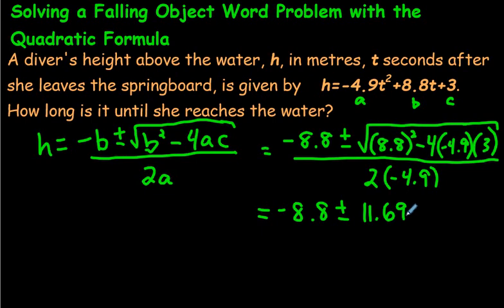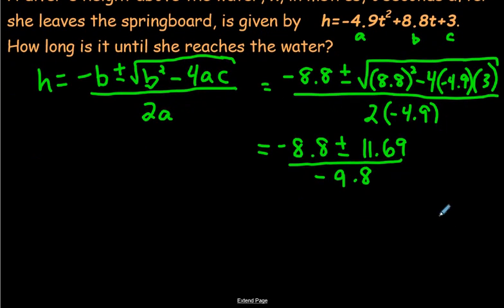If you were to do all of this and then take the square root of that answer, see if you get 11.69. On the bottom we know that 2 times -4.9 is going to be a negative number, it's -9.8.